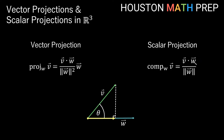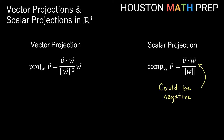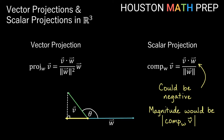Because this formula has a dot product on top, it's possible for the scalar projection to be negative. We know from our dot product discussion that the dot product is negative when the angle between the vectors is more than 90 degrees. In that case, the projection vector isn't pointing in the direction of W anymore — it's pointing in the opposite direction. So a negative scalar projection means the projection vector is a negative multiple of the unit vector in the direction of W, and to find the actual magnitude of the projection vector we need the absolute value of the scalar projection.